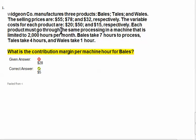Each product must go through the same processing in a machine that is limited to 2,000 hours per month. That machine is our bottleneck. It only has 2,000 hours. Bales takes seven hours to process, tails takes four hours, and whales takes one hour. So we can manufacture these products, but we're restricted to the machine of 2,000 hours.